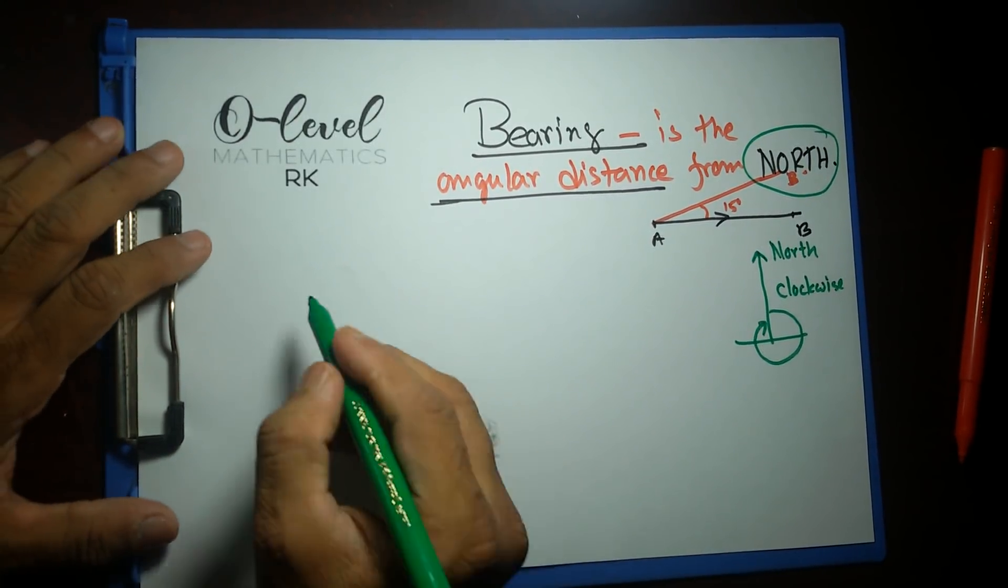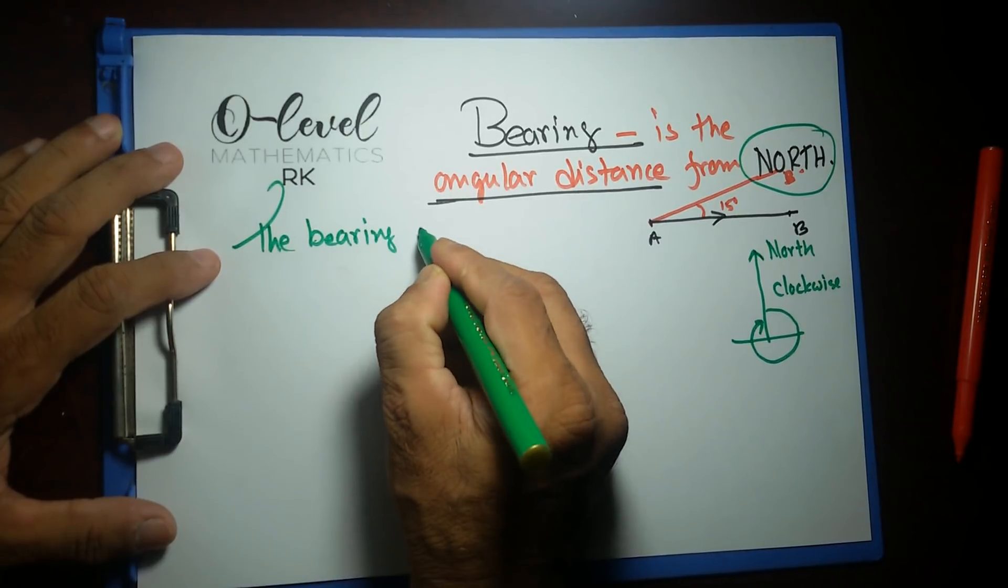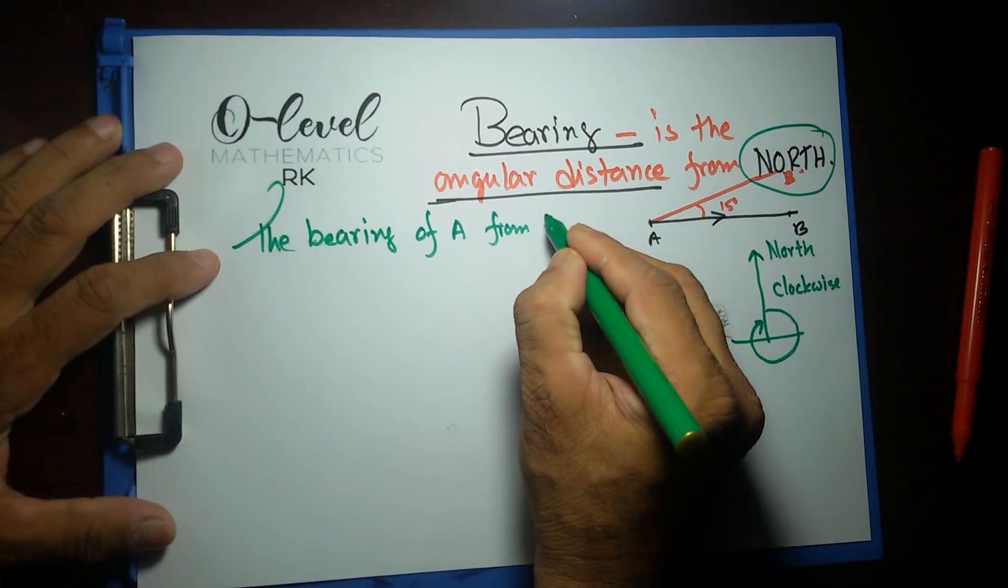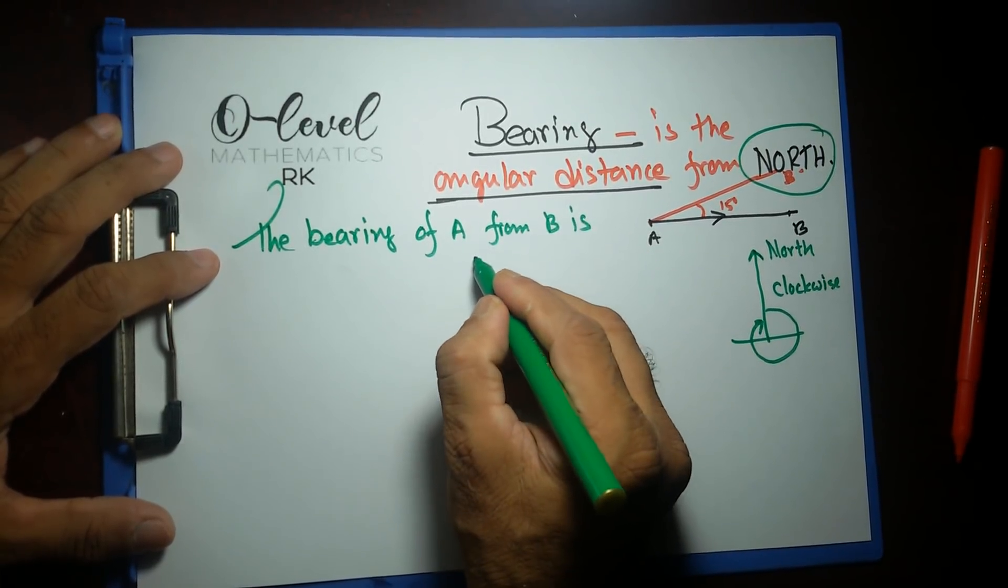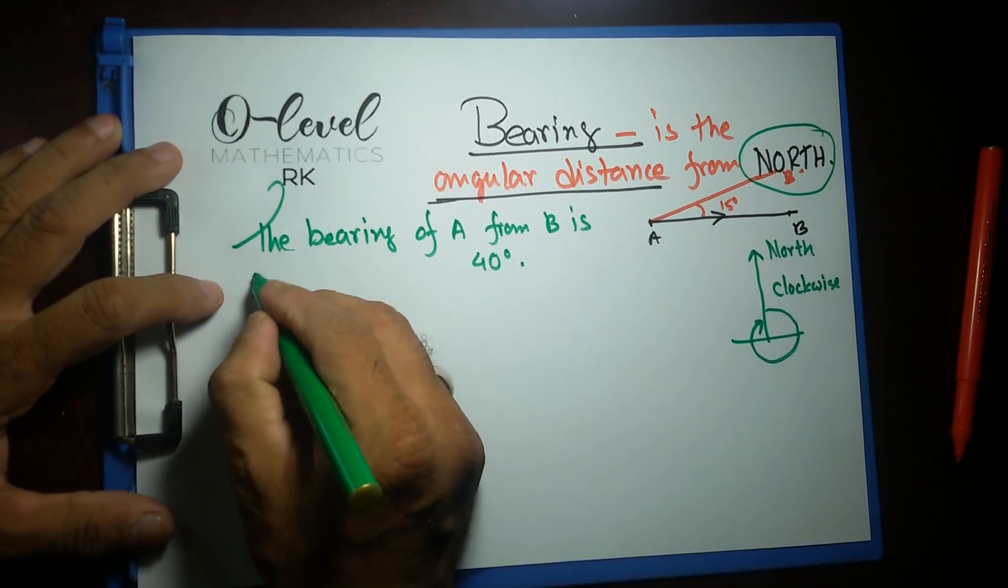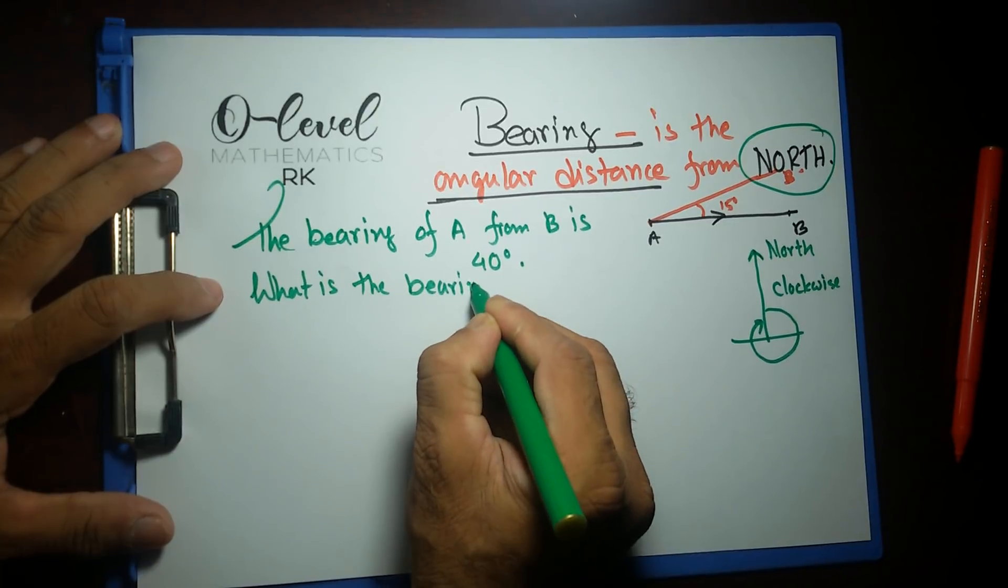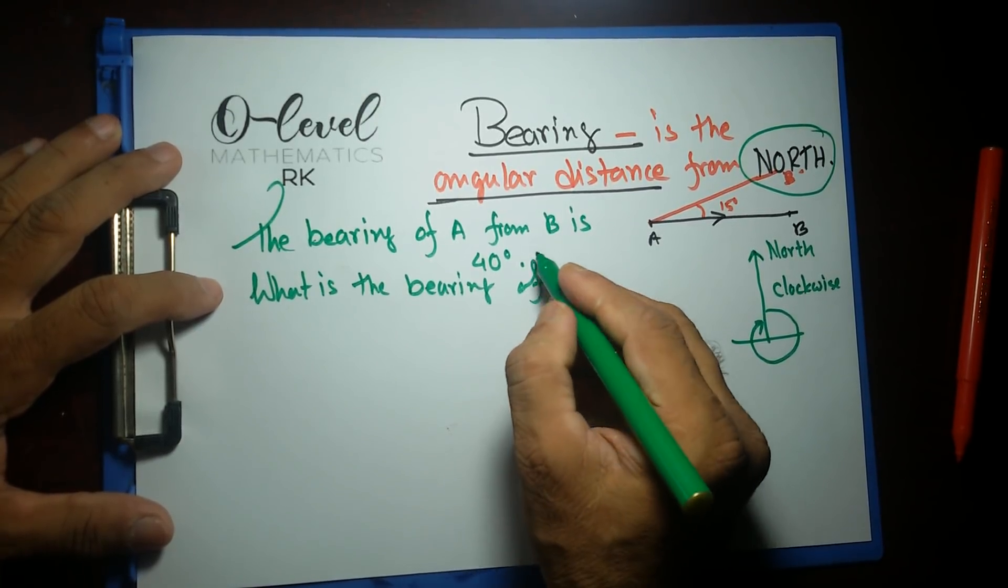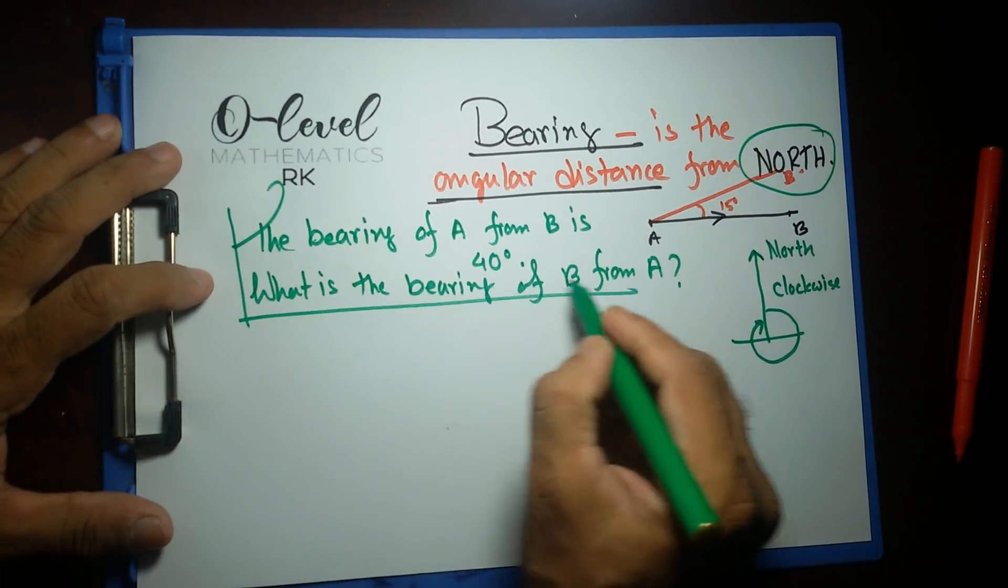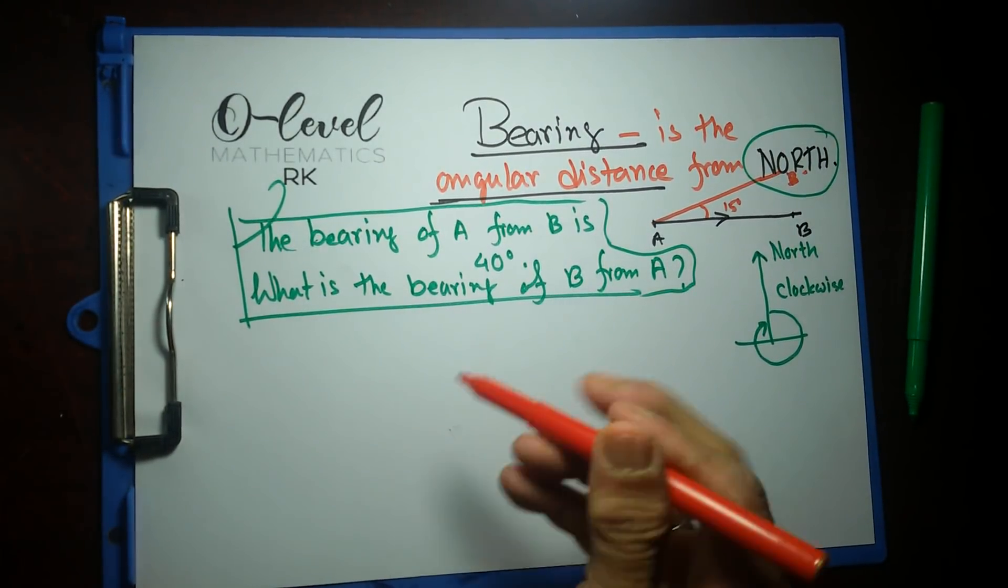Let me give you some example. Let's say the bearing of a point A from B is 40 degrees. This is given information. And the question says what is the bearing of B from A.